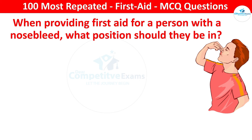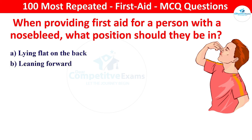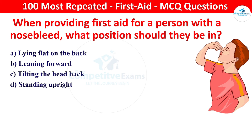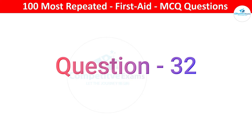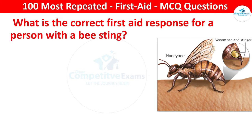Next question: when providing first aid for a person with a nosebleed, what position should they be in? Your options: lying flat on the back, leaning forward, tilting the head back, or standing upright. The right answer is leaning forward. Leaning forward helps to prevent blood from flowing down the throat and reduces the risk of swallowing blood.